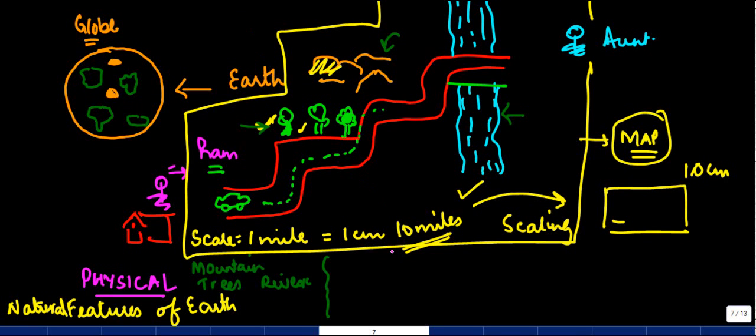The second type of map that you have is a political map. Now this has nothing to do with politics. But what it shows is what are the various cities, towns, and villages. So let's say Ram was living in a town called A, so town A is where Ram lived. As he took a left turn there was a place here which was called village B.